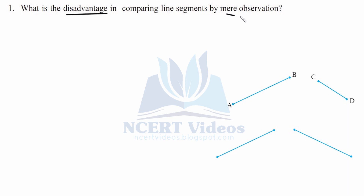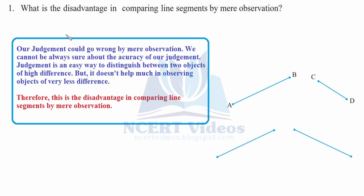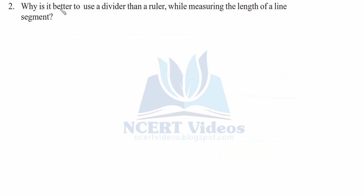We are just observing and we are unable to tell whether any given line is equal or not. Our judgment could go wrong by mere observation — we cannot always be sure about the accuracy of our judgment. Observation is an easy way to distinguish between two objects of high difference, like AB and CD where the difference was very high, but it doesn't help much when the difference is very small. Therefore, this is the disadvantage in comparing line segments by mere observation.